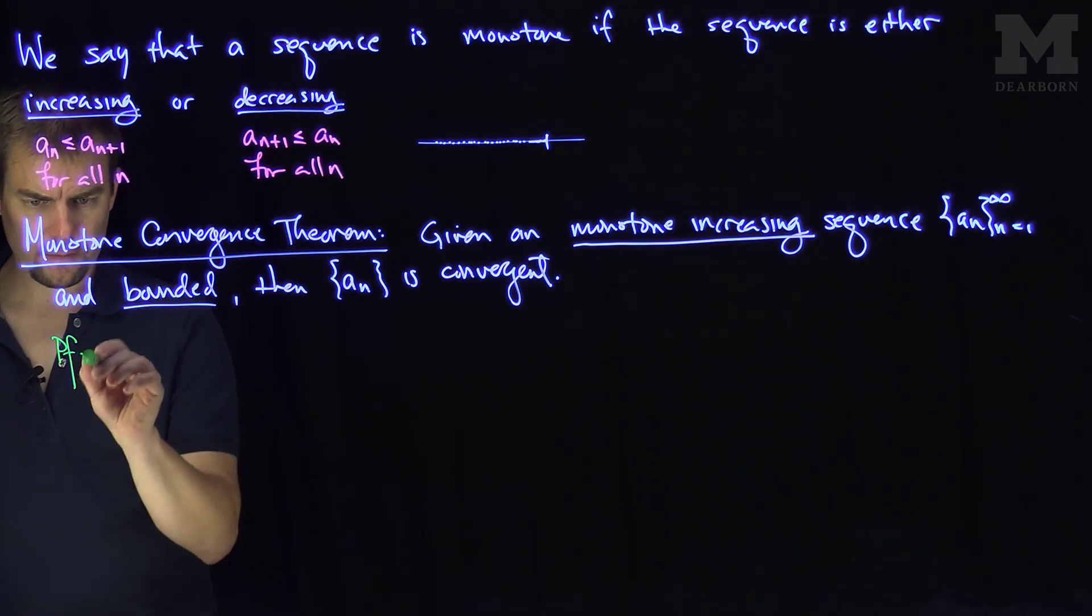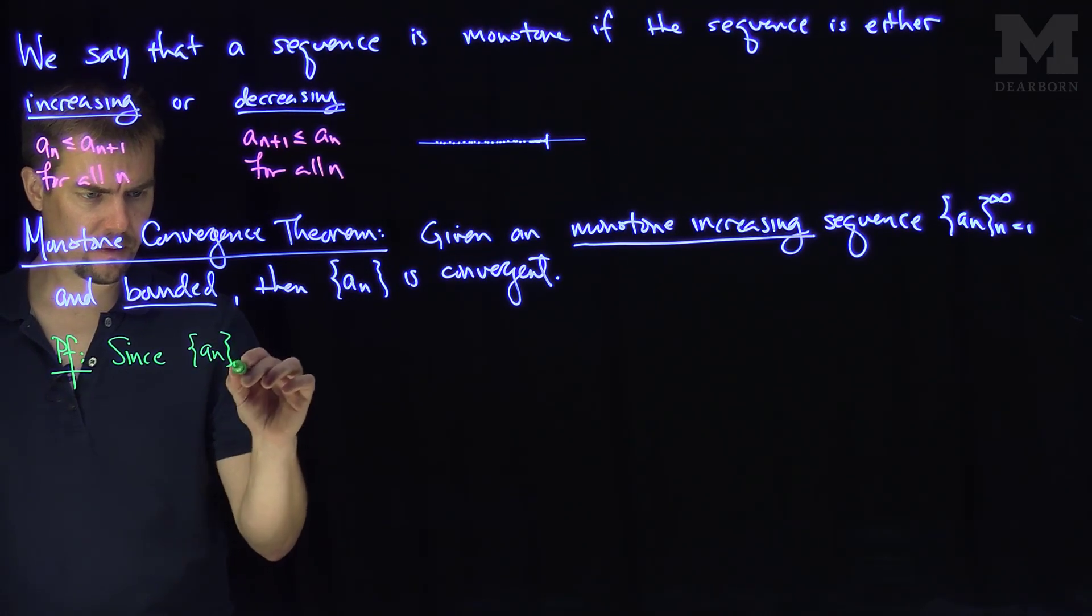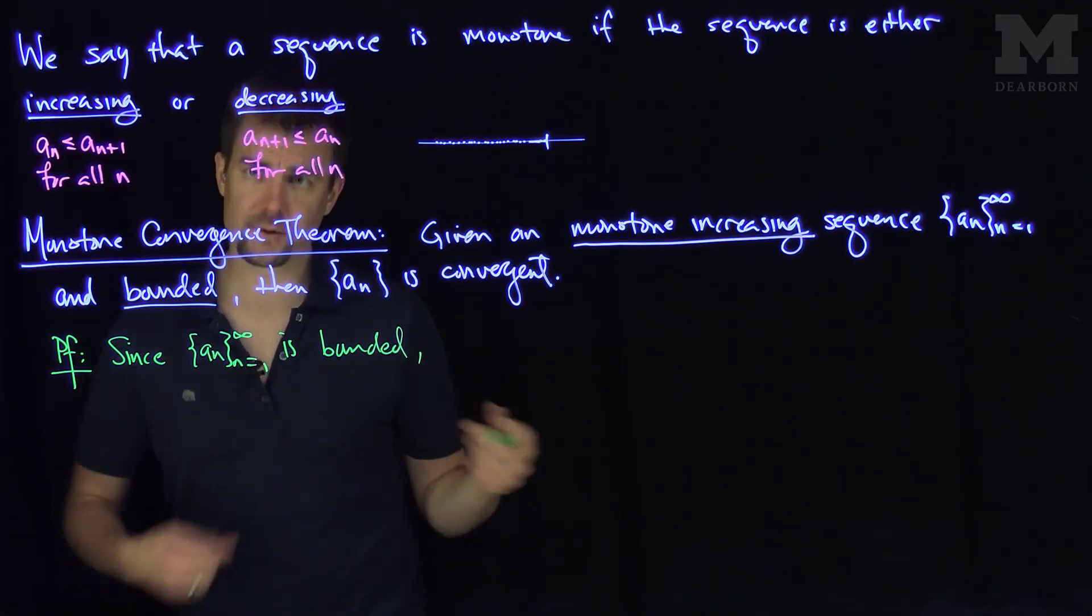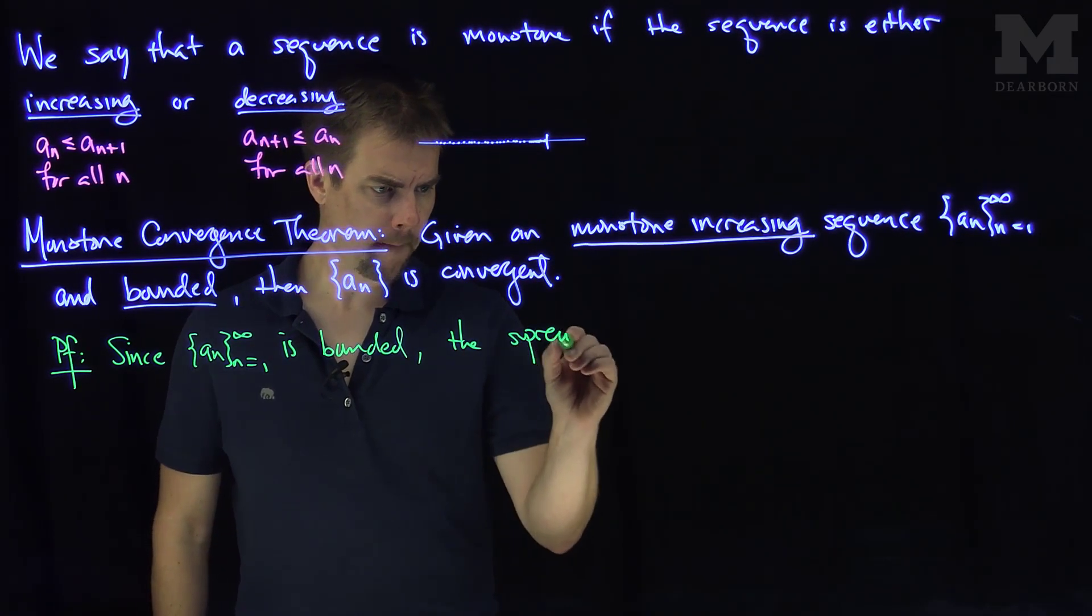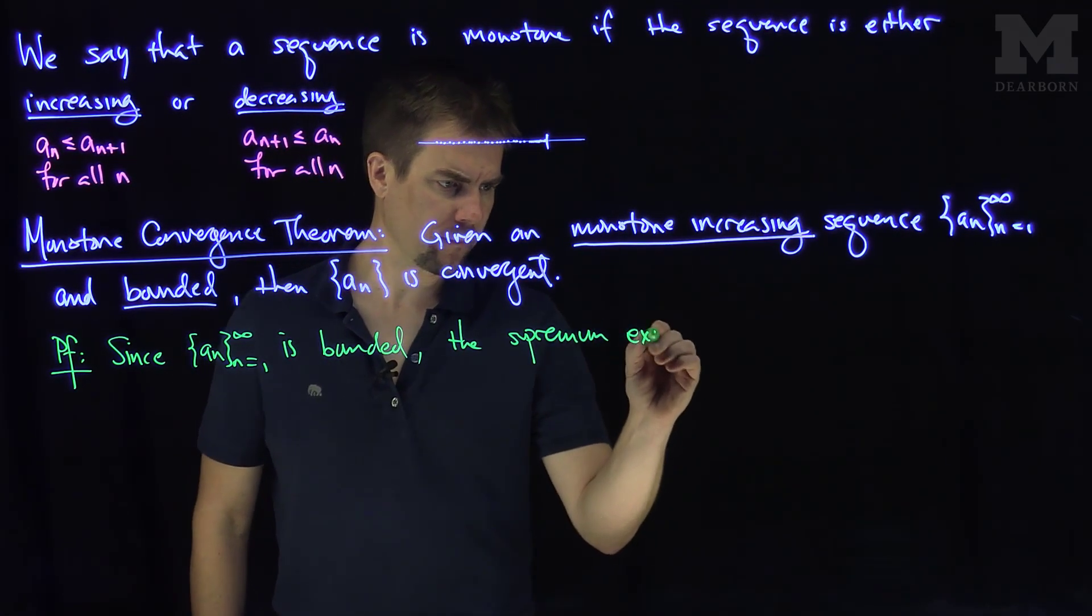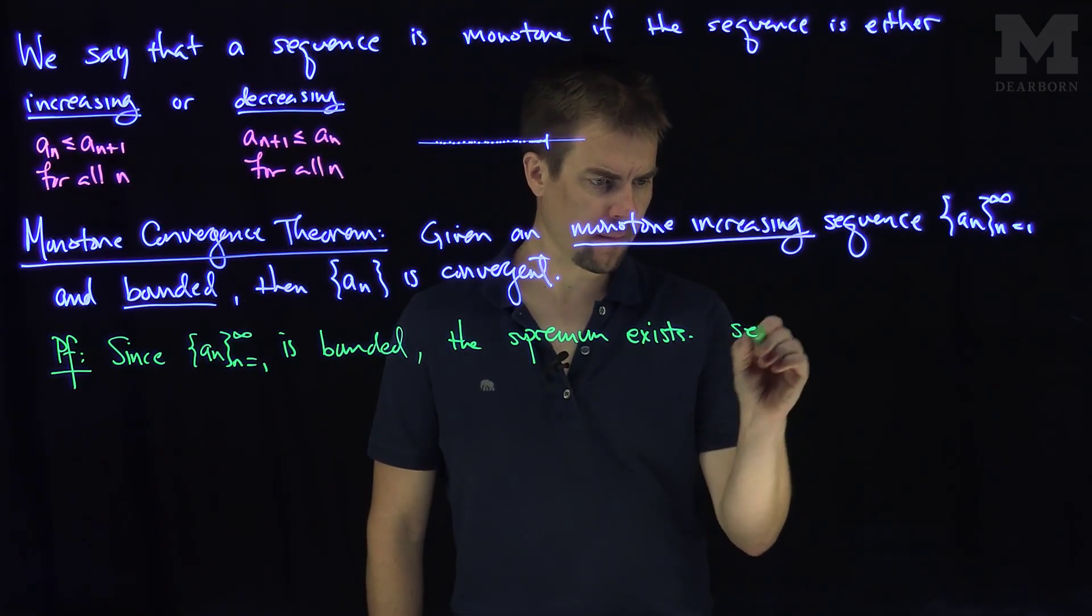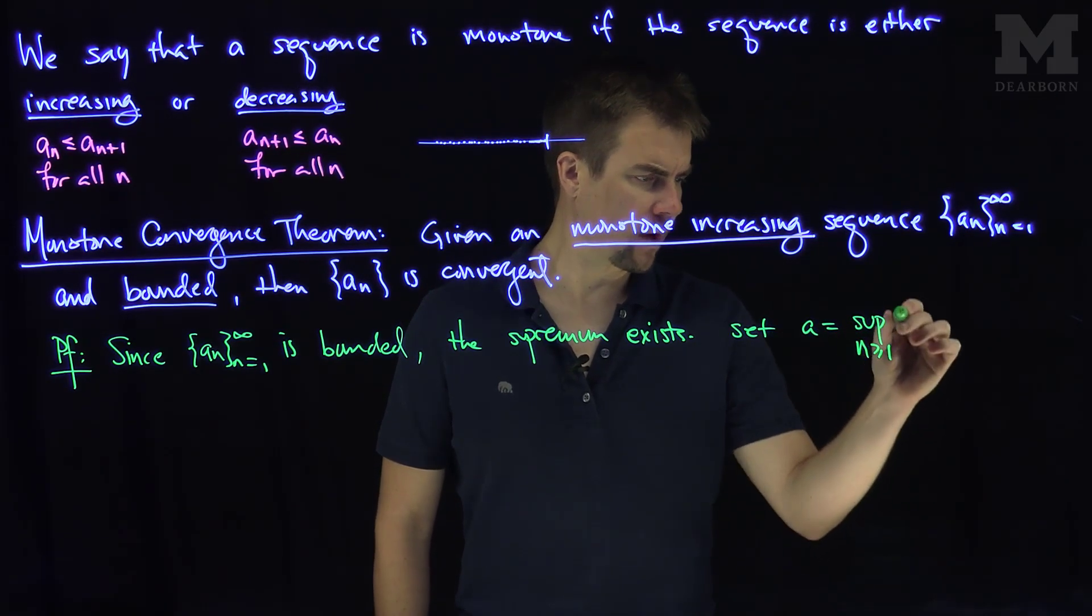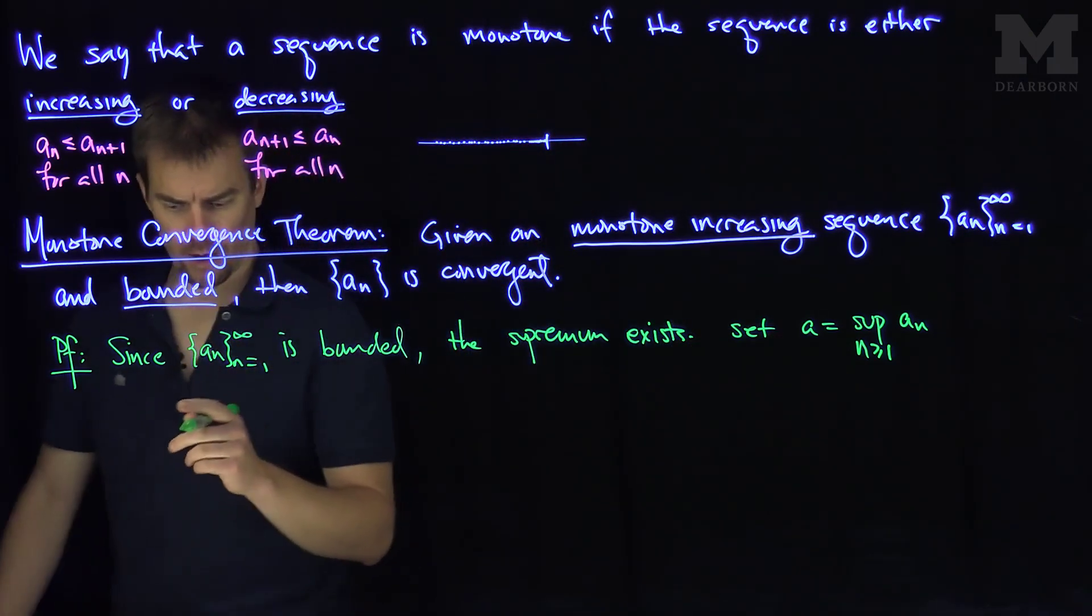Proof: Since a_n is bounded, its supremum exists. So let's set a to be the supremum over n ≥ 1 of the collection a_n. Now we're going to show that our sequence a_n converges to a.